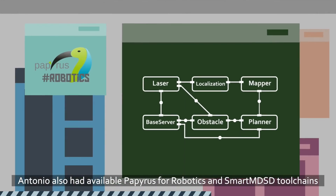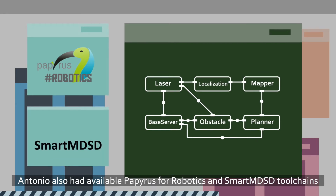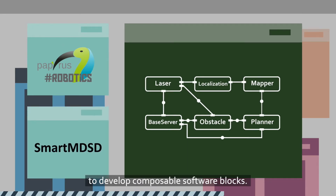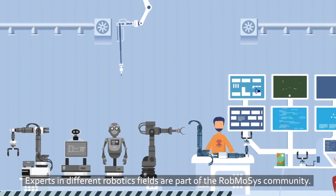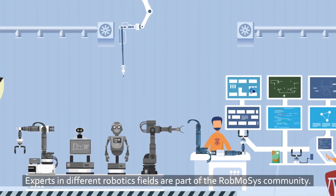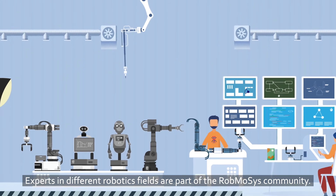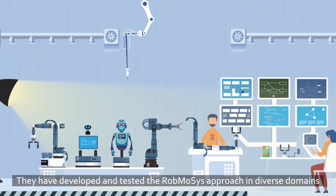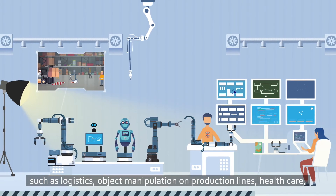Antonio also had available Papyrus for robotics and smart MDSD toolchains to develop composable software blocks. Experts in different robotics fields are part of the Robmosis community, and they have developed and tested the Robmosis approach in diverse domains.